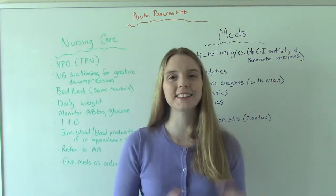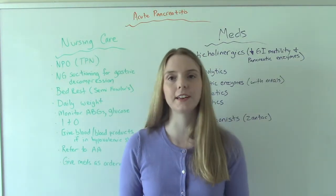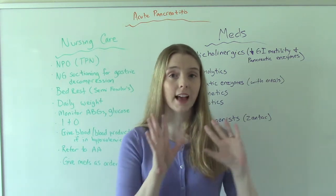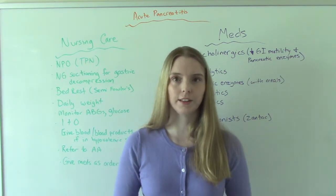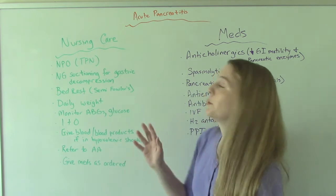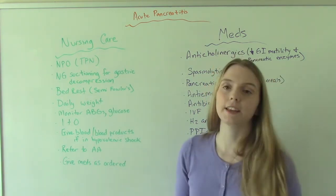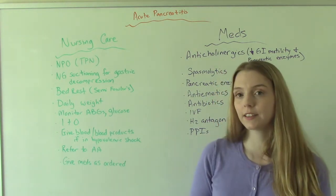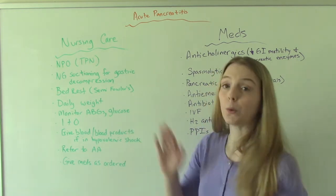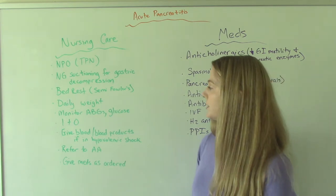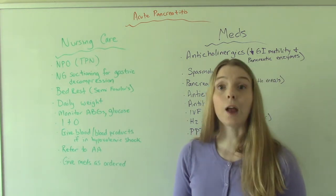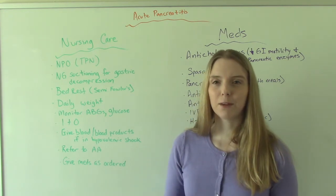Now let's talk nursing care. These patients are probably going to be NPO and possibly put on TPN. They'll have an NG tube placed to help with gastric decompression. They'll be on bed rest in the semi-Fowler's position, which helps with pressure on the diaphragm. We'll weigh them daily, monitor their ABGs, glucose, and I&O. We'll give blood or blood products if they show signs of hypovolemic shock — and remember, low platelets is a common lab finding, so we might give platelets.